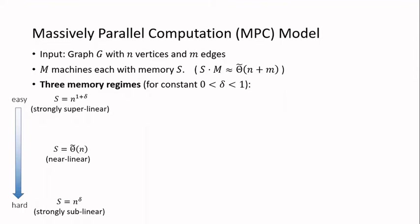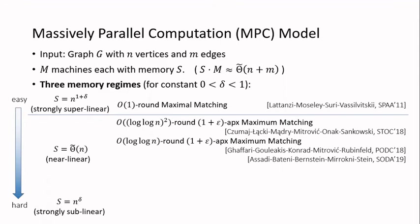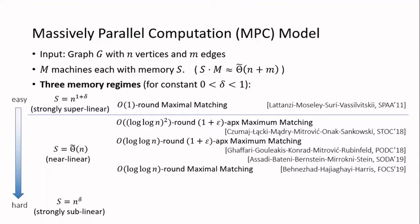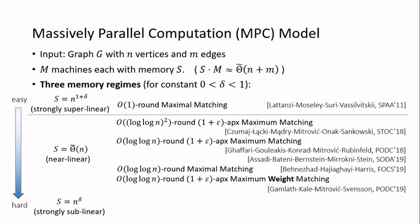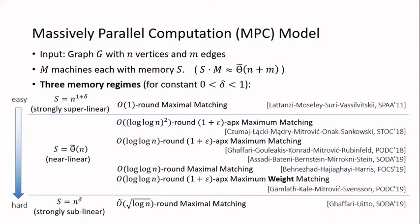I will take the matching problem as an example and look at some previous MPC algorithms. In the strongly superlinear regime, we can solve the maximal matching problem using only constant rounds. In the near-linear regime, the first sublogarithmic algorithm was given by Chumai and others — they can solve the 1 plus epsilon approximate maximum matching problem in log log n squared rounds, later improved to log log n rounds. Recently there is a log log n round algorithm for maximum matching, and also an extension to weighted approximate maximum matching. In the strongly sublinear regime, the best algorithm has round complexity root log n.